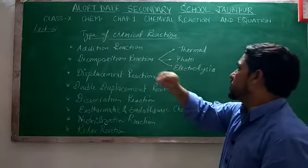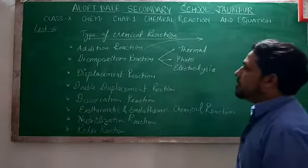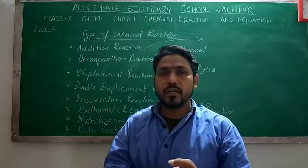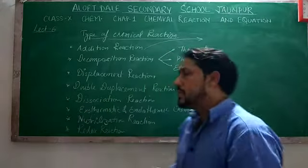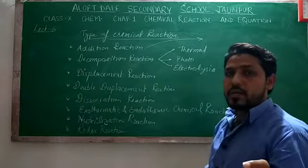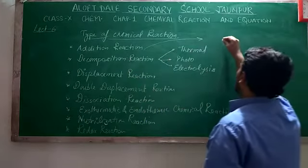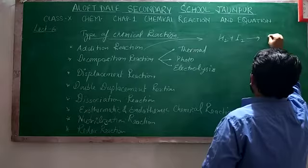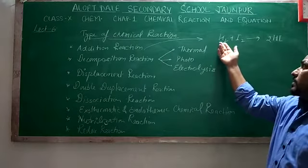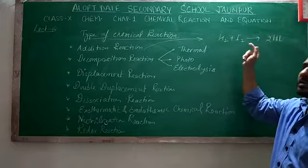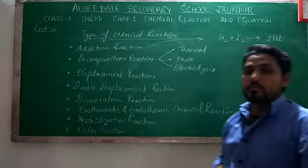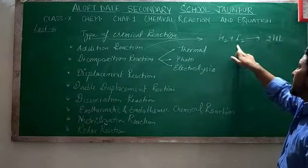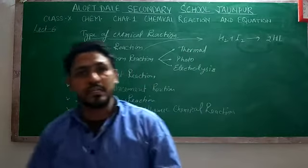In this course, for a short example, we will discuss addition reaction. When two or more reactants combine together and form a single product, that is an addition reaction. For example, one mole of hydrogen (H2) and one mole of iodine (I2) combine together and form two moles of hydrogen iodide (HI). Here, different reactants combine together to form a single product — this is known as addition reaction.